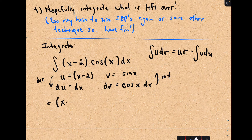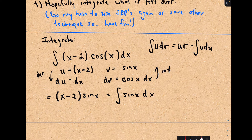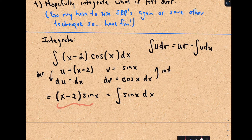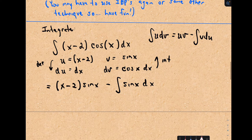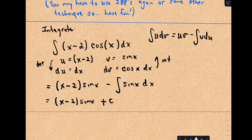So we get u, which is x minus 2, times v, which is sine x, minus the integral of v, which is sine x, times du, which is just dx. This is great — I went from an integral I wasn't sure about and turned it into something manageable. Notice there's no integral in the first term; we don't have to integrate that. I just have this remaining integral to deal with, and that one I can integrate. The antiderivative of sine x is negative cosine x, so negative times negative cosine x gives positive cosine x. I've done all the integration, so plug on the plus c, and that's our solution.